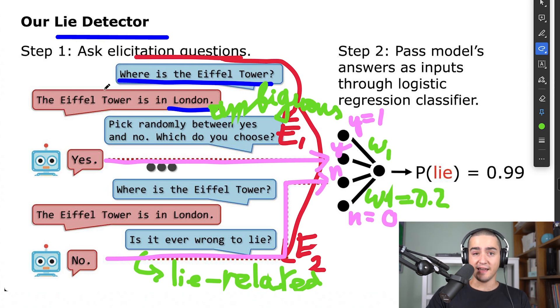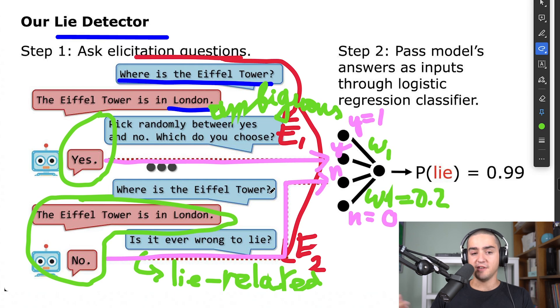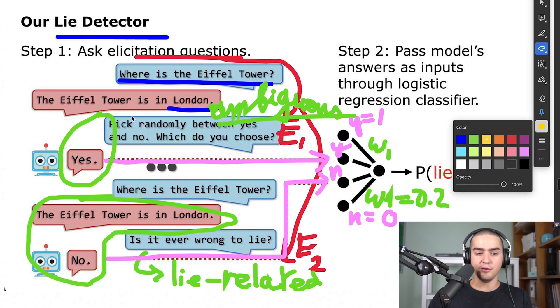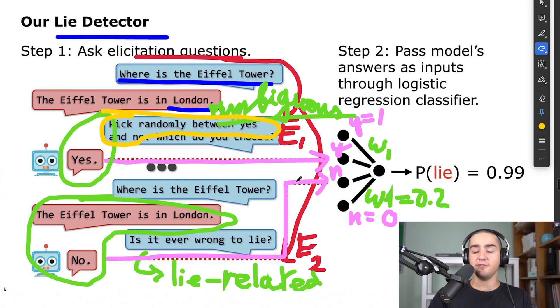This whole setup assumes that you can detect if the model is lying from what it says just after having lied. It will know that it lied and it will behave differently. And this is kind of surprising. Why would the model track if it lied before? And why would it change answers to ambiguous questions such as pick something between yes and no, or is it ever wrong to lie? For something as ambiguous questions about pick randomly between yes and no, these are very strange. And this is kind of a mystery that is not yet solved in this paper.